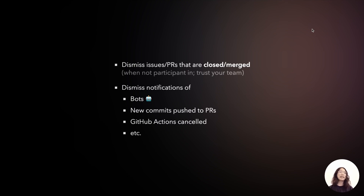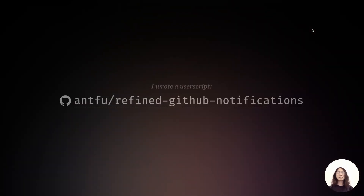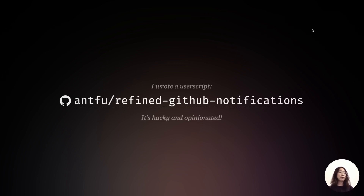At first I did this manually — checking issues and dismissing them using the 'done' checkbox. But at some point I figured this still requires a lot of effort, so I decided to write a user script. It's open source in a public repo. A user script is a snippet of JavaScript that you inject using a Chrome extension to run code locally. It's very hacky and opinionated, but I hope it can be a good starting point for writing your own customizations on how you manage notifications.